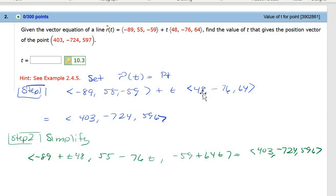So I take the t and multiply it to the 48 and bring it in as the first component. I take the -76, multiply it to the t, and bring it into the second component and the third. So I do exactly the same thing, and then I set it equal to that point.